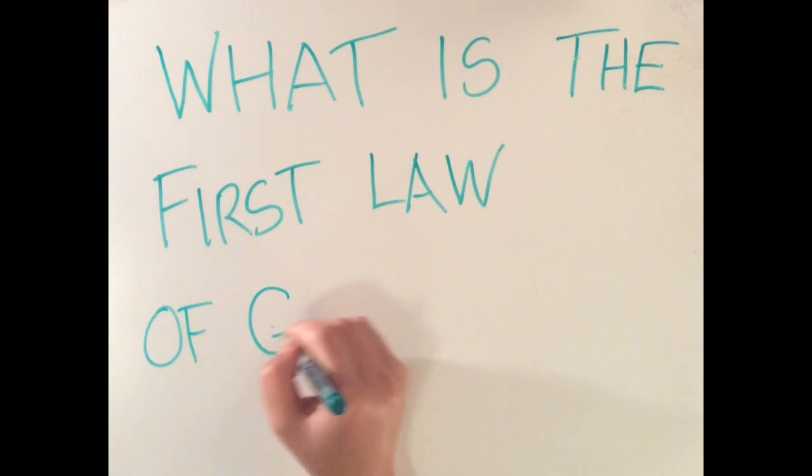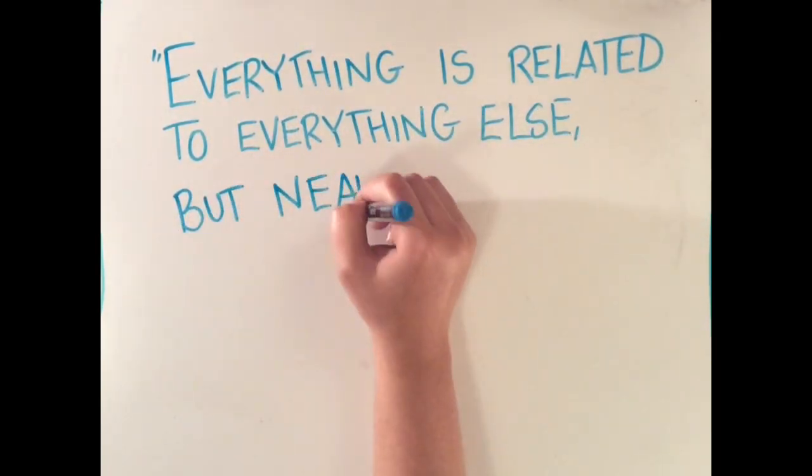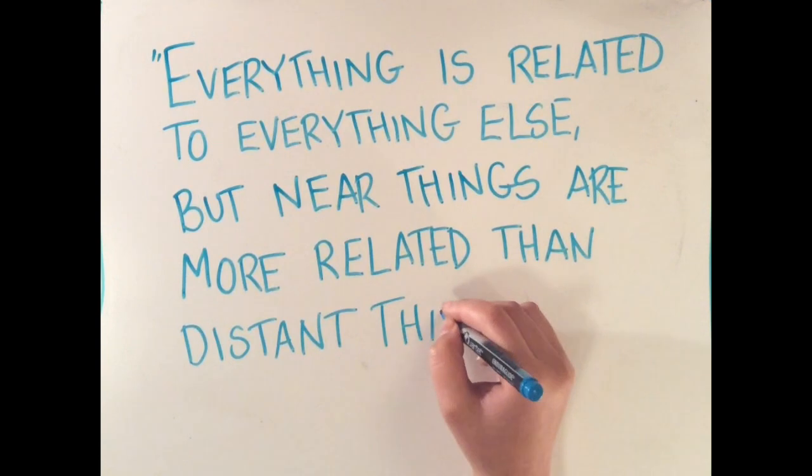What is the first law of geography? A famous American-Swiss geographer named Waldo Tobler wrote the first law of geography which states, everything is related to everything else, but nearer things are more related than distant things.